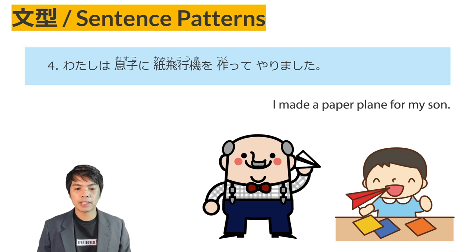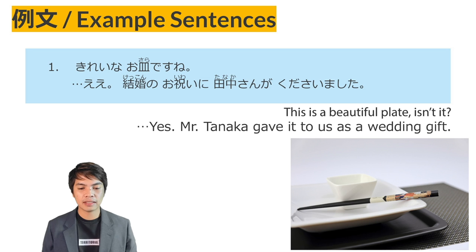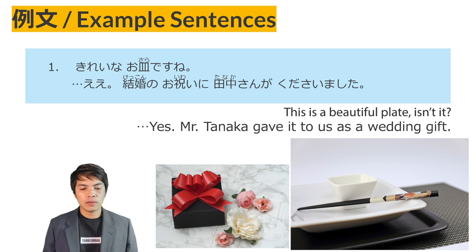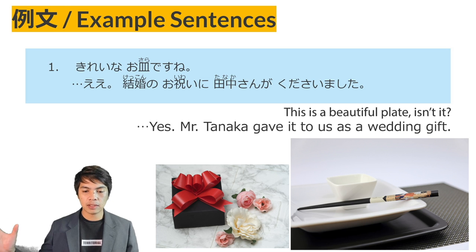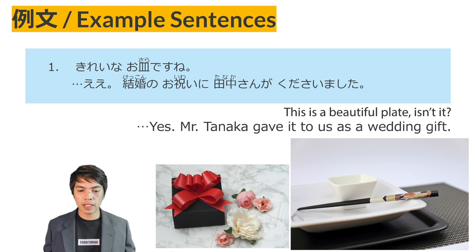To understand more about these patterns, let's read some example sentences. Example sentence No. 1: Kirei na osara desu ne. — This is a beautiful plate, isn't it? Yes, it is. Kekkon no oiwai ni — kekkon means marriage, oiwai is celebration — as a wedding gift, Tanaka san ga kudasaimashita. Mr. Tanaka is the one who gave it to me. So instead of kuremashita, they used kudasaimashita — a more polite way of saying kuremashita.